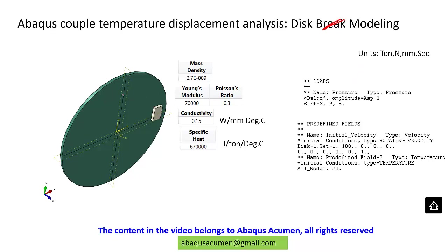The disc can be made of steel, aluminium, or other materials, but we have taken a two-wheeler disc with aluminium material properties. The overall study is how to model coupled temperature displacement in a disc brake scenario. The units used are: tonne, Newton, millimetres, and seconds. Both disc and pad are modeled with aluminium. Initial temperature is 20 degrees C.